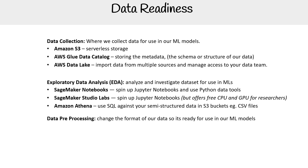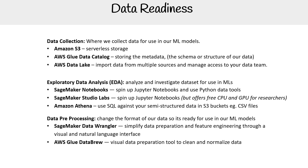There are two services in particular for data pre-processing: Data Wrangler from SageMaker and AWS Glue DataBrew. The key difference is that SageMaker Data Wrangler is intended for ML pipelines, while AWS Glue DataBrew is a more generic tool for cleaning and normalizing data. Both are really great — if you're dumping data into your S3 bucket, it won't notice the difference — but Data Wrangler is more specifically intended for machine learning pipelines.